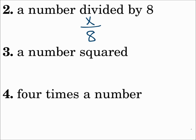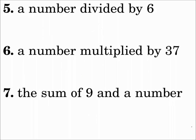Number three: a number squared. A number could be the variable b, so b squared. Number four: four times a number. Four is simply 4, times is multiply, and for a number we could use the letter n — giving 4n. Number five: a number divided by 6. A number could be t; divided by is division, so t over 6.